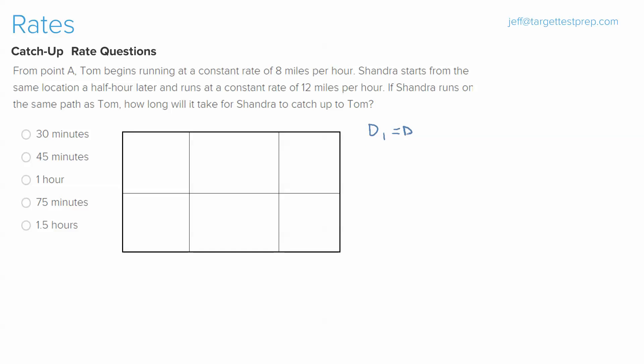That formula is simply distance 1 equals distance 2. This formula is going to play a role towards the end of the problem after we fill in our table.